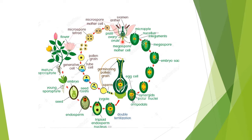The flower has a peduncle — the stalk of the flower — sepals, petals, androecium, and gynoecium. We call them calyx, corolla, androecium, and gynoecium. Two processes are going on simultaneously in the flower: in the male part, the androecium, and in the female part, the gynoecium. Both developments are taking place there.